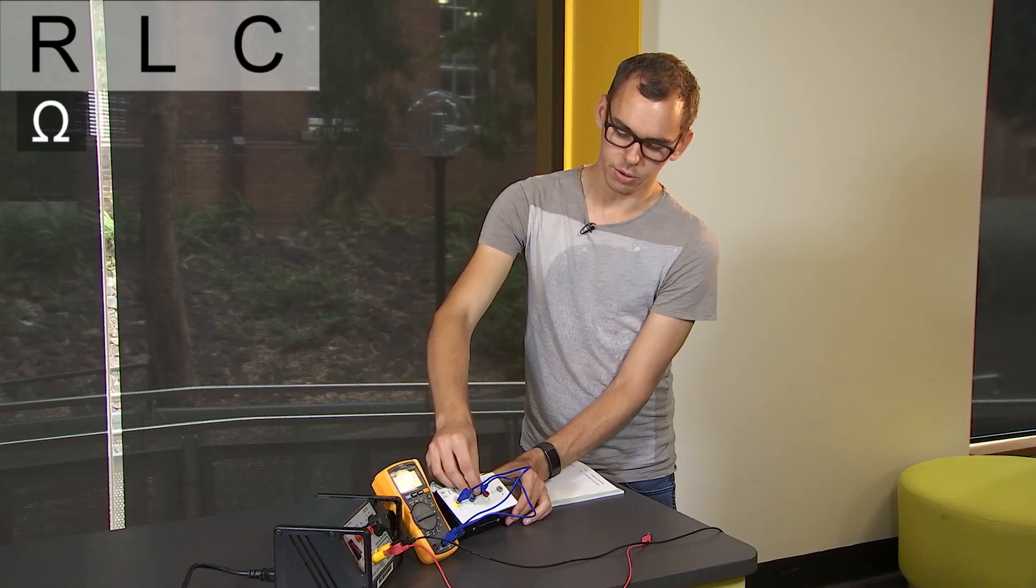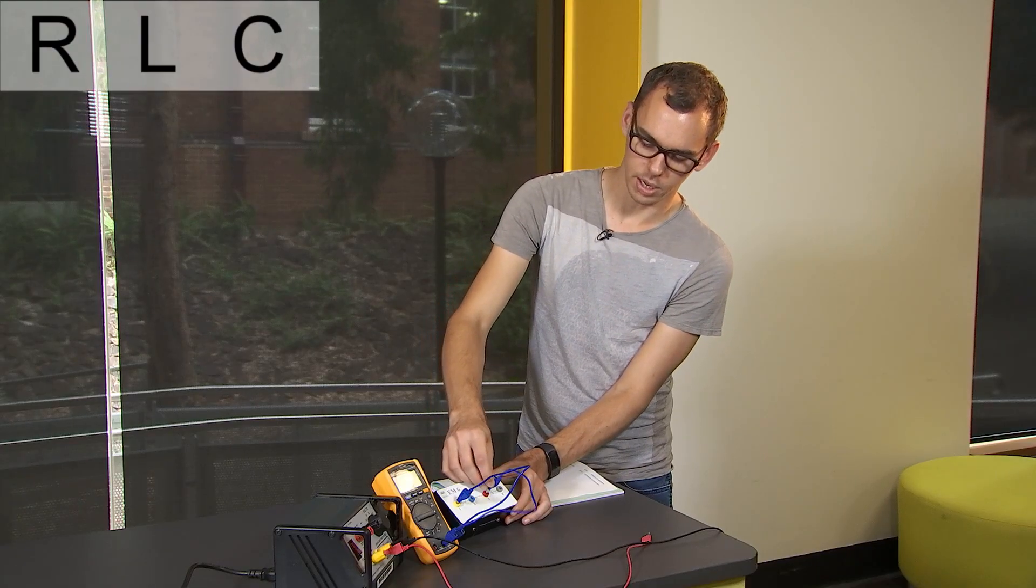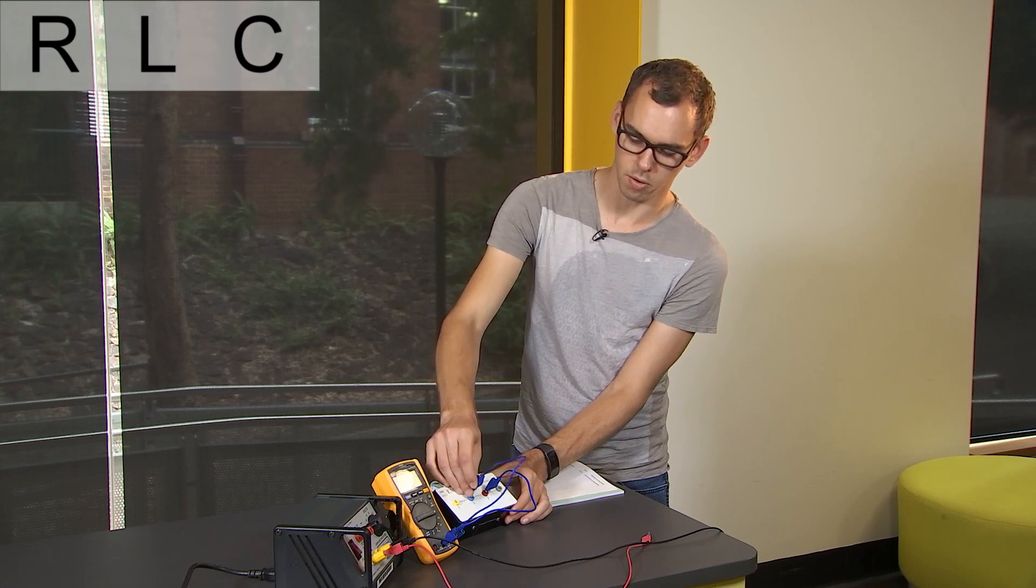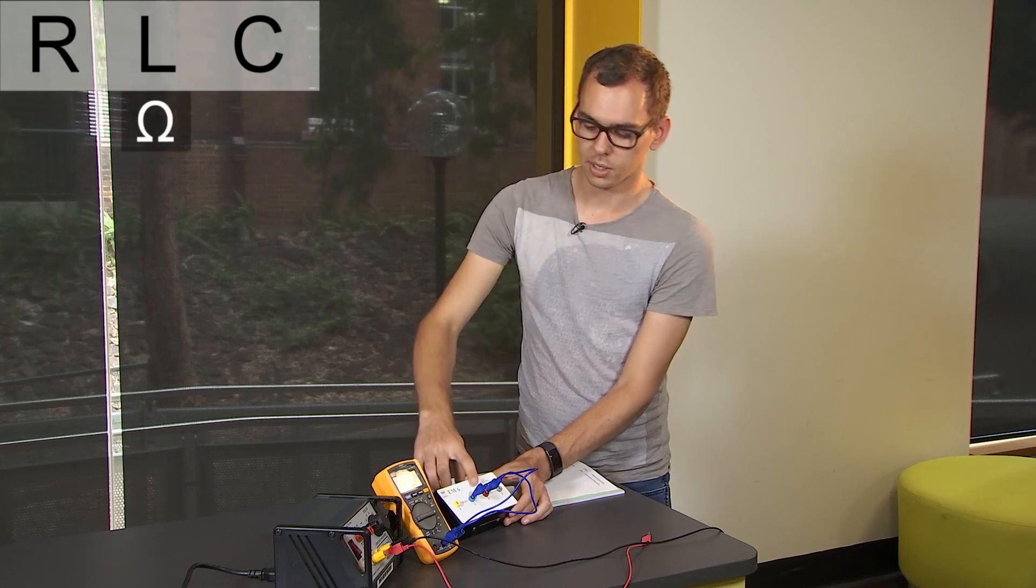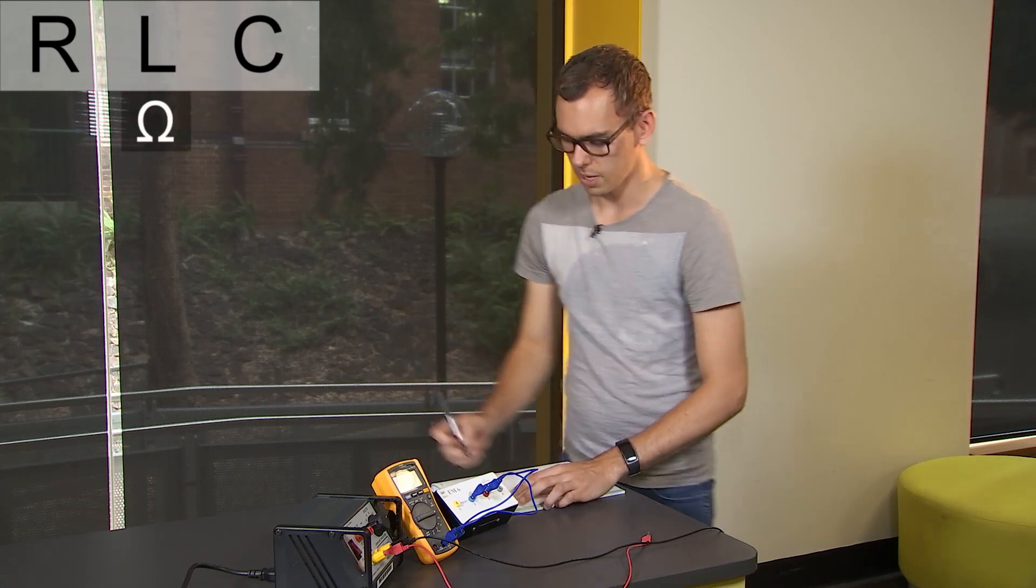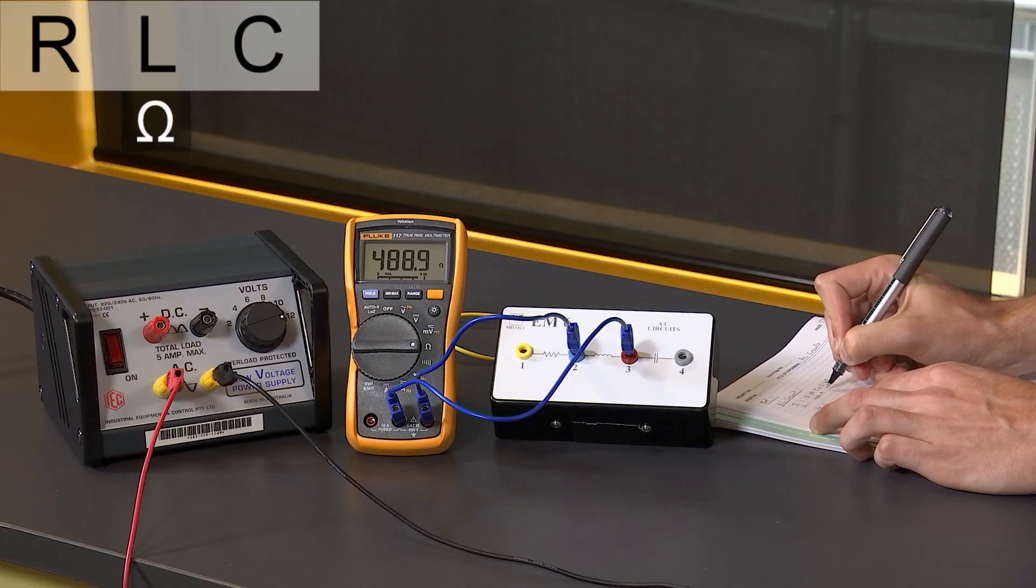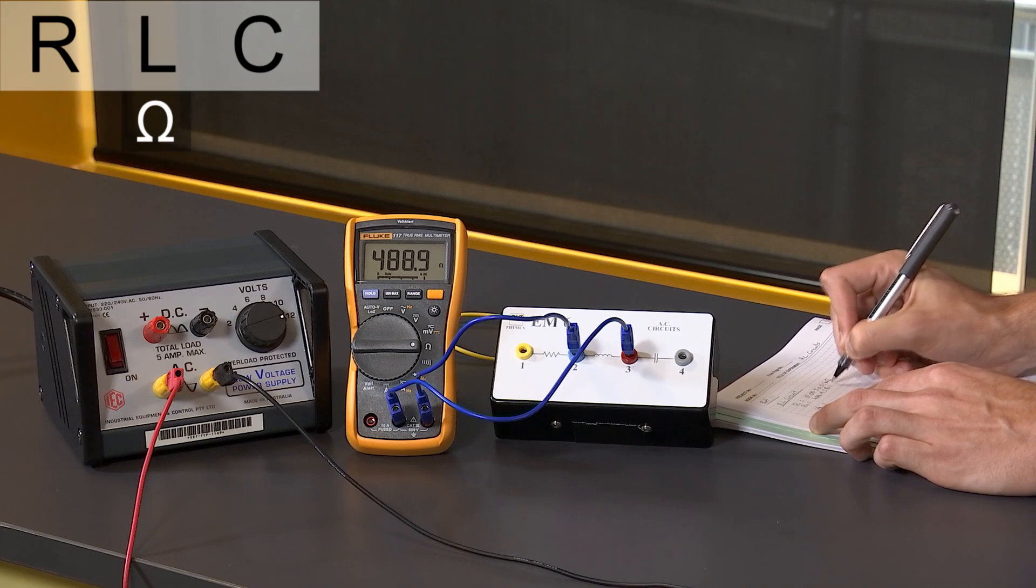Next I'm going to disconnect these leads and connect them across pins two and three to measure the resistance of the inductor and record this in my lab book: 488.9 plus or minus 0.1 ohms.